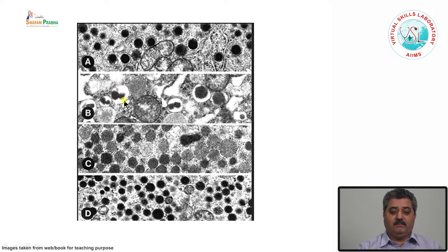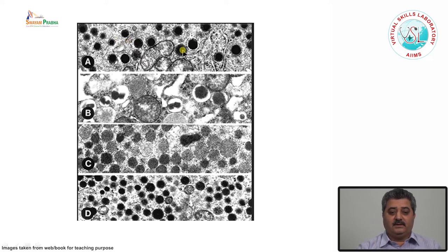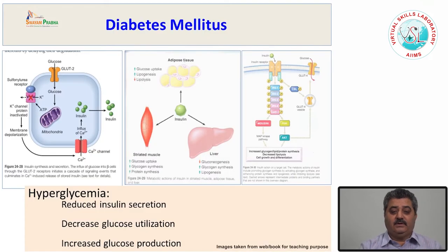For example, the insulin-producing cells have neurosecretory granules with a halo around electron-dense material and they are crystalline and rectangular in shape. The other hormones are rounded. The glucagon-producing cell granules have a central electron-dense part with a less electron-dense periphery. Based on these characteristics, one can differentiate between the different hormone-producing cells.